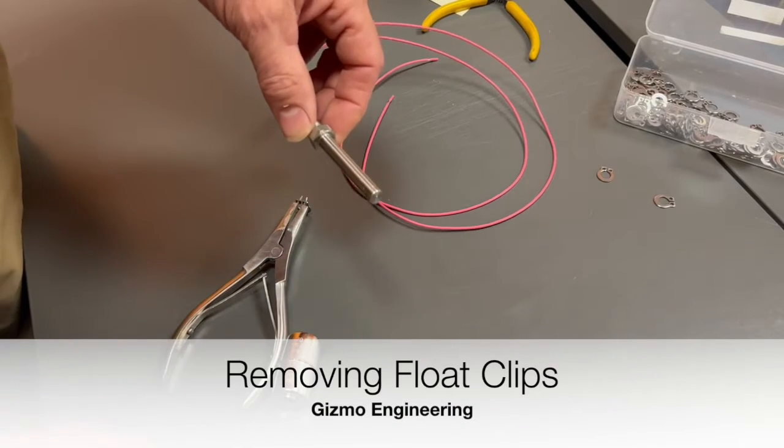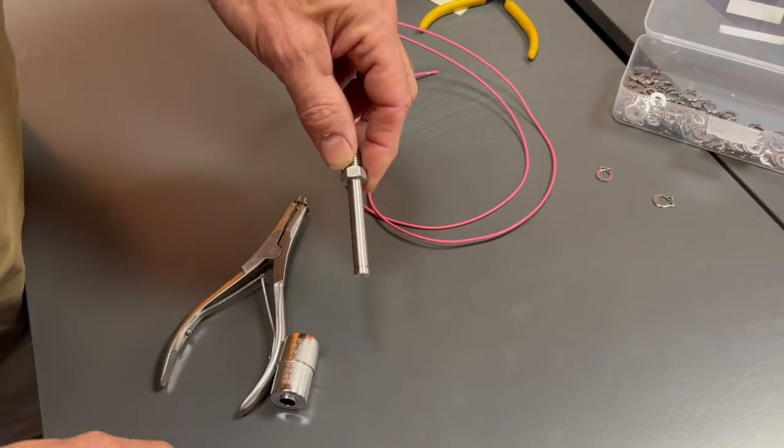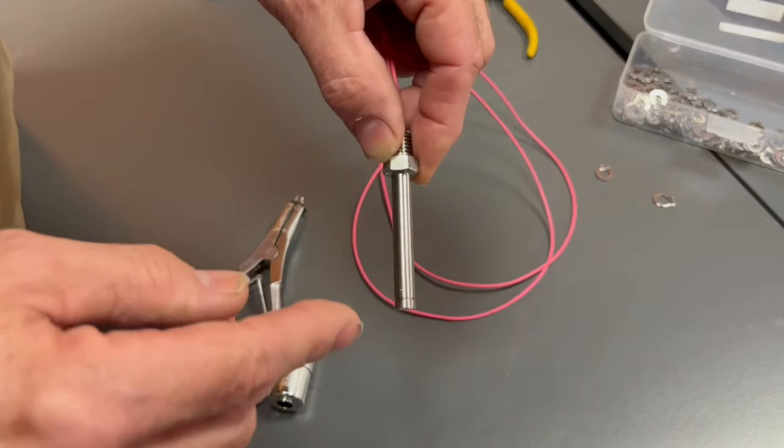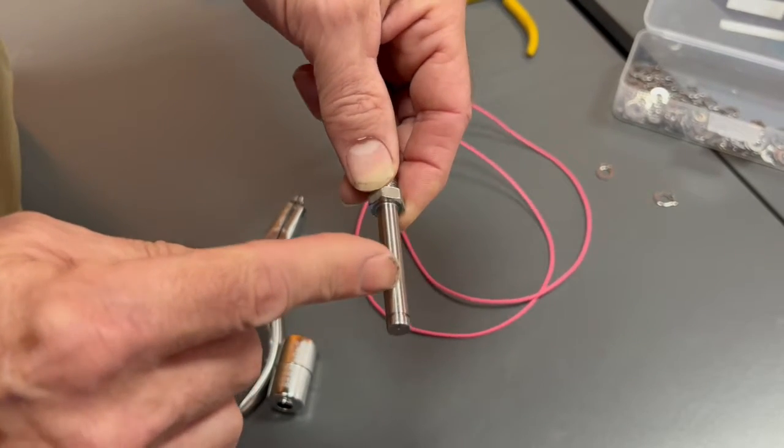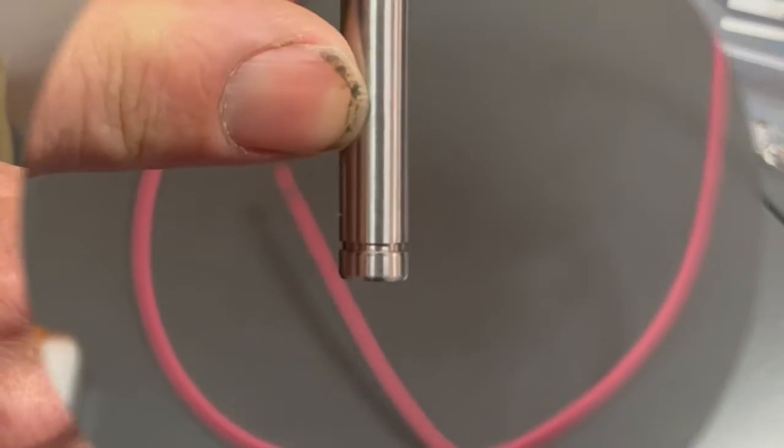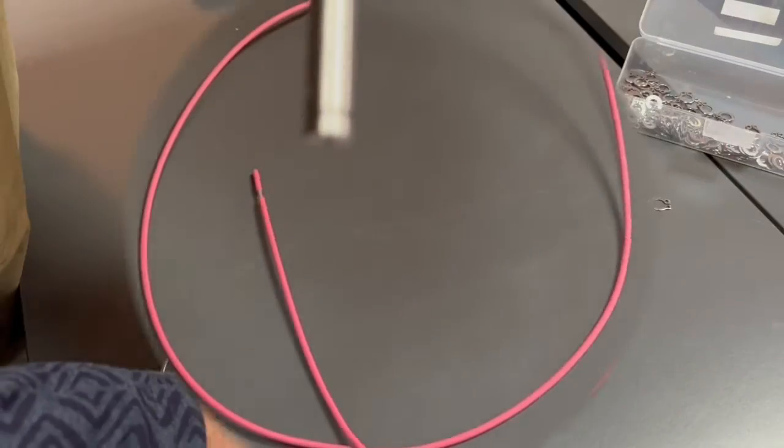Okay, this is instructions on how to replace a stainless steel float switch. The first thing to notice is if there's a groove here. Let's see if we can zoom in. If there's a groove, then we'll use an E-clip.